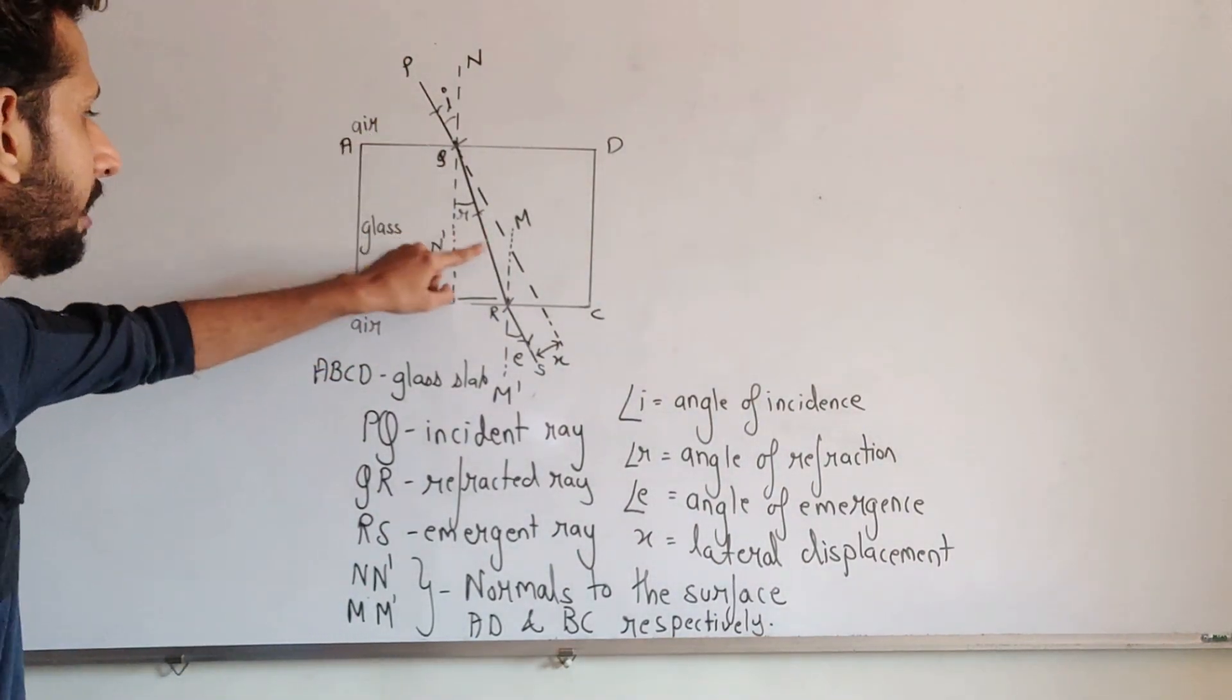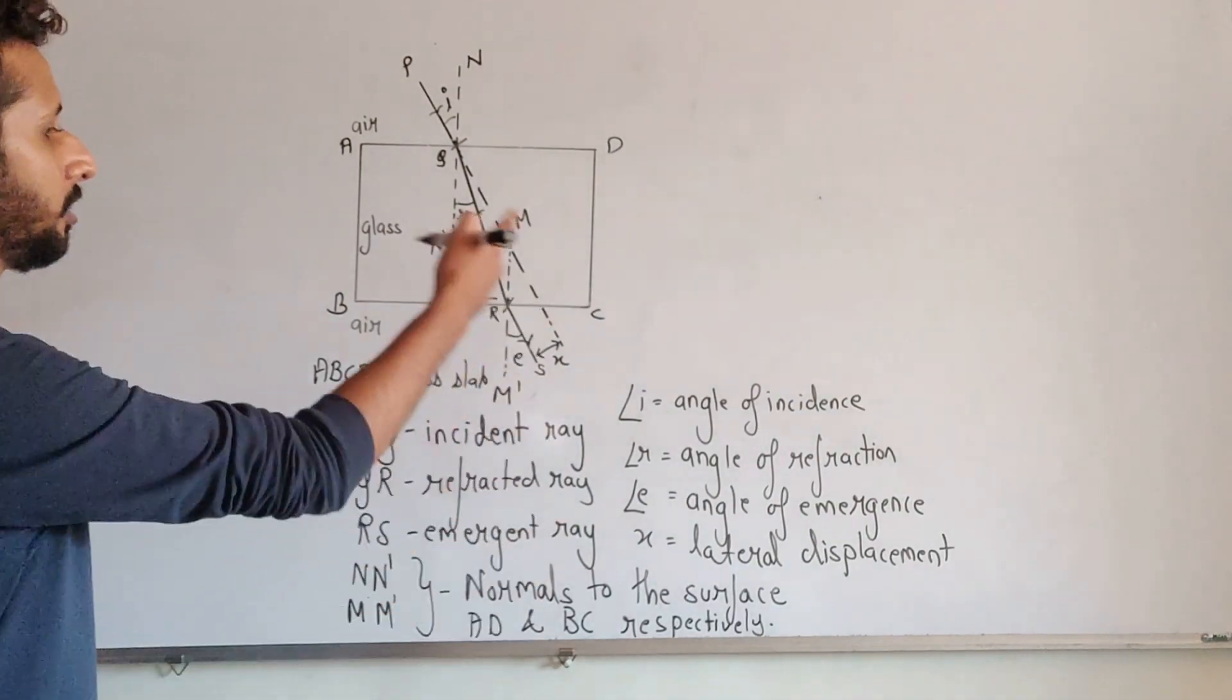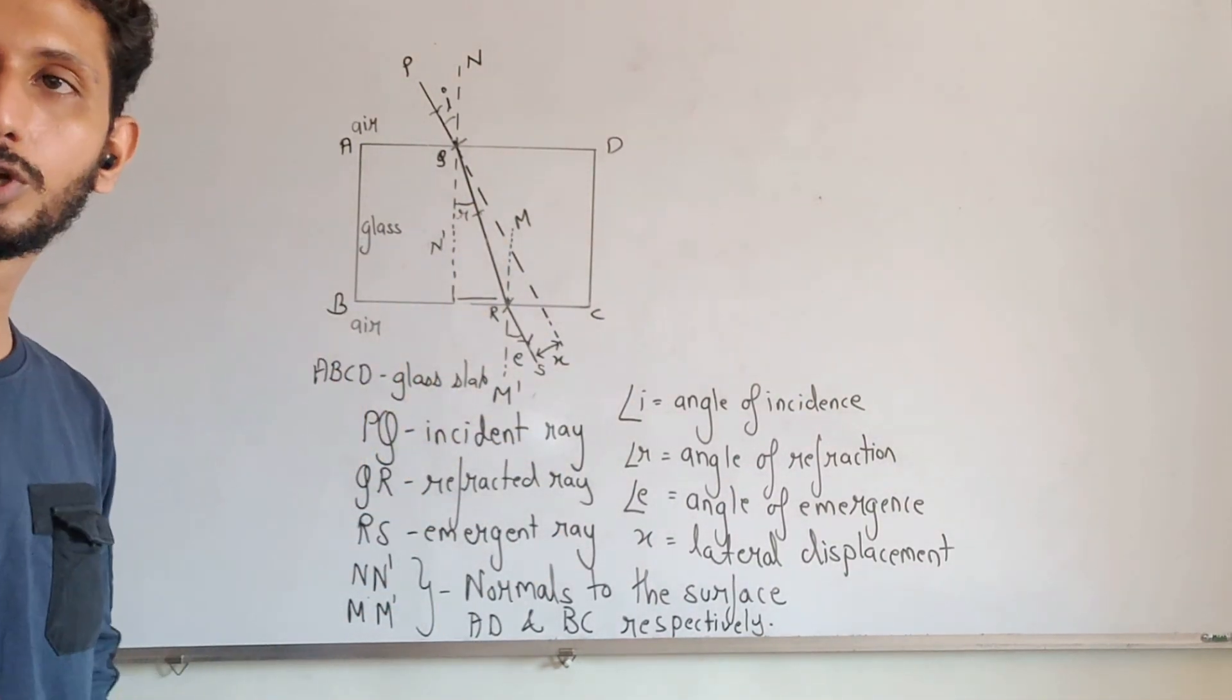Also make sure the arrows have to be drawn. Without the arrows, you are supposed to get zero. So that is how your glass slab diagram overall should look.